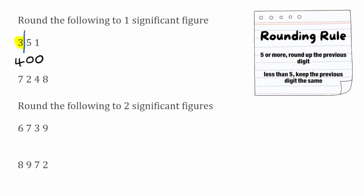We're going to follow that method with the next question: 7,248. Our first significant figure is the 7, as that's the first digit that isn't a zero. I'm then going to put my line between that 7 and the next digit. We want to determine whether that 7 remains as a 7 or rounds up to an 8. We look at the next digit, which is a 2. Because it's less than 5, we're going to keep the previous digit the same, so the 7 remains as a 7. We then fill in our placeholders: a zero under the 2, a zero under the 4, and a zero under the 8. So 7,248 rounded to one significant figure is 7,000.